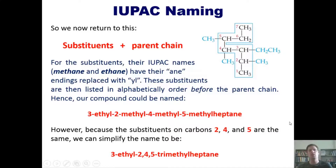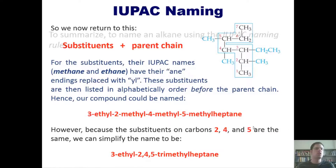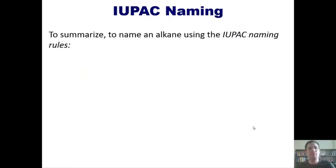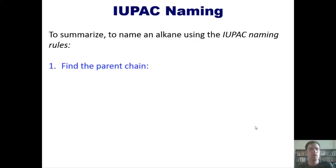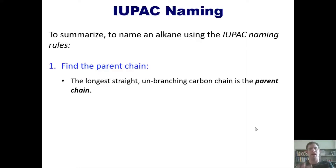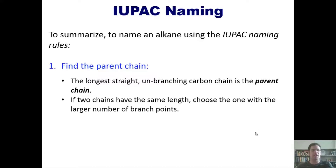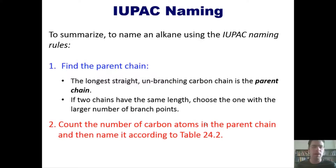To summarize how to name an alkane using IUPAC rules: first, find the parent chain — the longest straight unbranching carbon chain. If two chains have the same length, choose the one with the largest number of branch points. Second, count the number of carbon atoms in the parent chain and name it according to table 24.2.